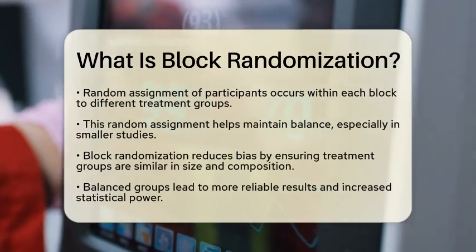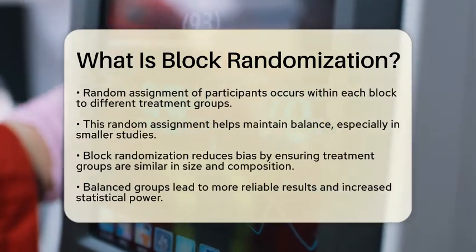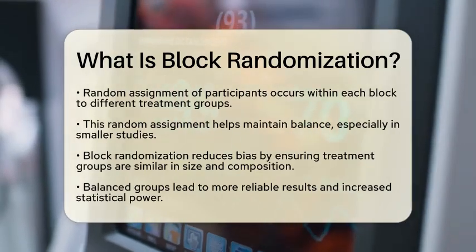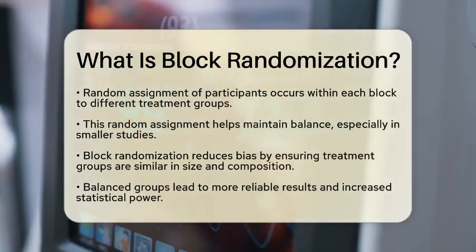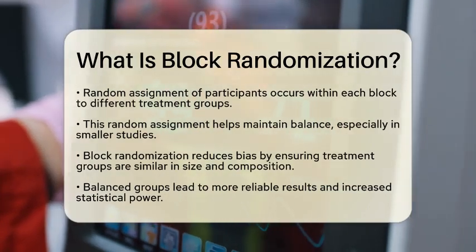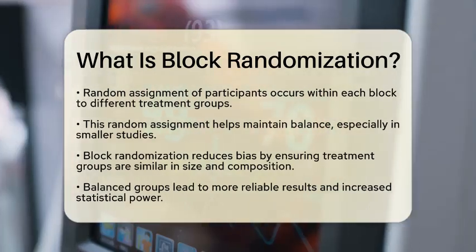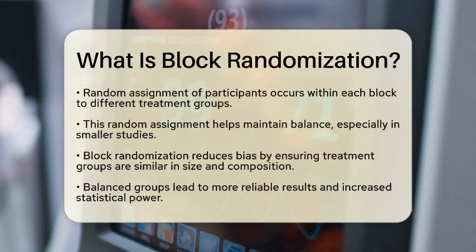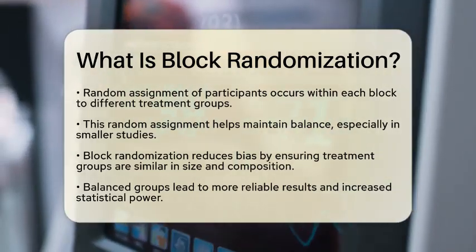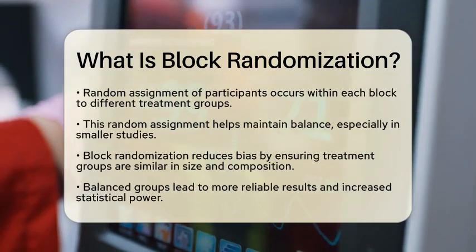Now, why is this important? Block randomization reduces bias by ensuring that treatment groups are similar in size and composition. This balance leads to more reliable results. Additionally, having evenly sized groups increases the statistical power of the study. This means researchers are more likely to detect true effects if they exist.